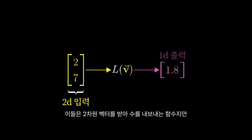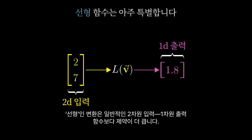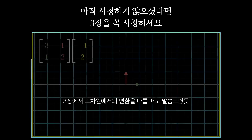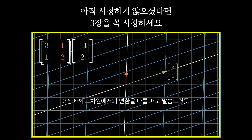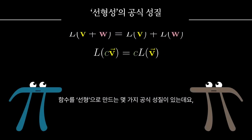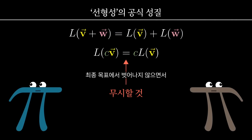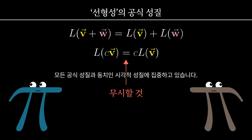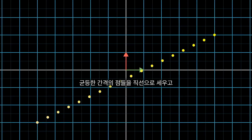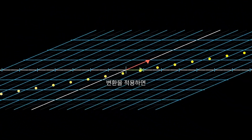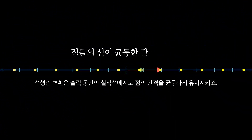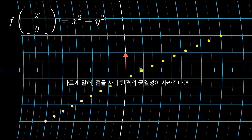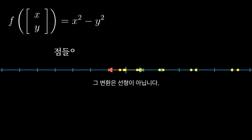These are functions that take in a 2D vector and spit out some number. But linear transformations are of course much more restricted than your run-of-the-mill function with a 2D input and a 1D output. As with transformations in higher dimensions, there are some formal properties that make these functions linear, but I'm going to focus on a certain visual property that's equivalent to all the formal stuff: if you take a line of evenly spaced dots and apply a transformation, a linear transformation will keep those dots evenly spaced once they land on the number line. Otherwise, if there's some line of dots that gets unevenly spaced, then your transformation is not linear.